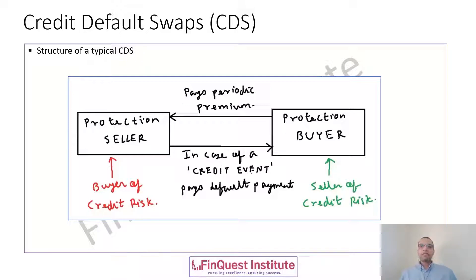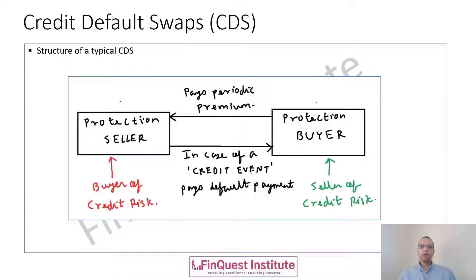The protection buyer is the party which is trying to manage the credit risk, or who wants to move the credit risk away from their books. The protection seller is the person who is willing to take on the credit risk, or who will purchase the credit risk from the counterparty. These are the two parties between which this transaction happens.